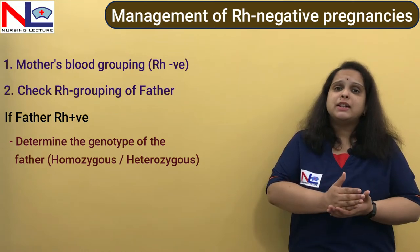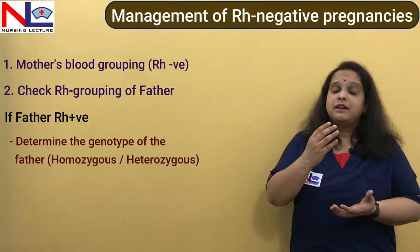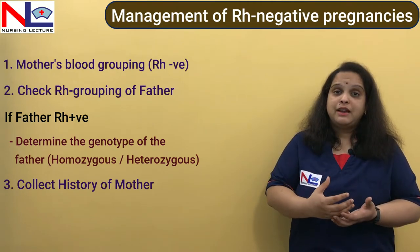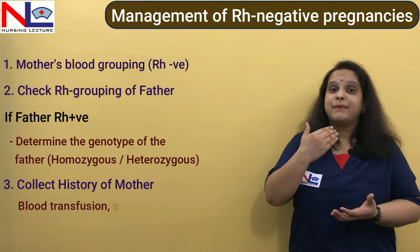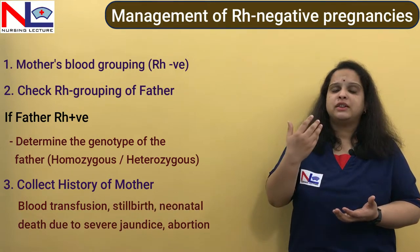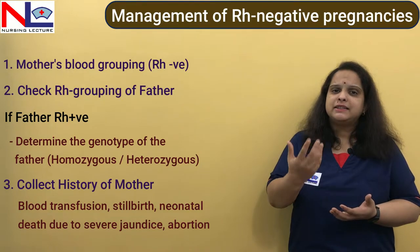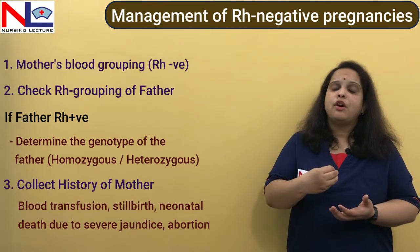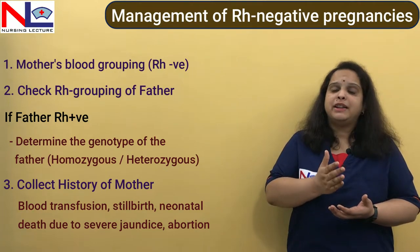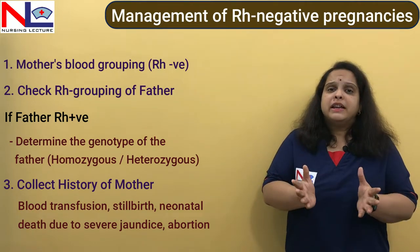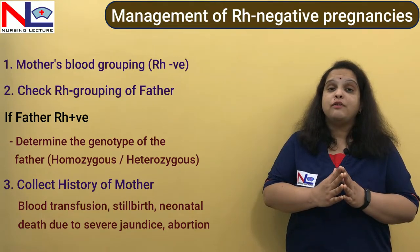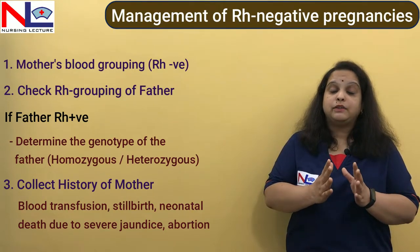The second important step is to collect a detailed obstetric history: whether she had a previous mismatched blood transfusion, previous abortion, ectopic pregnancy, stillbirth, or a history of a fetus or newborn badly affected by hemolytic disease. This history gives a basic idea for the line of management we can plan.